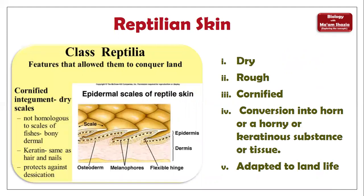The skin of reptiles is very interesting. It is dry, rough, and cornified. The biggest challenge for land organisms is evaporative loss — the organism loses water in the dry environment. This is the chief problem for land-dwelling animals. The skin of reptiles has epidermal scale-like covering that is very tough and hard. The corneified scales are not homologous to fish scales — fish scales grow differently in water. The reptilian scales protect against desiccation. Keratin is present in the skin.